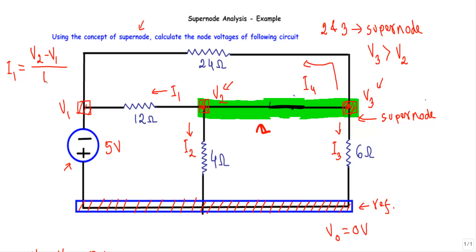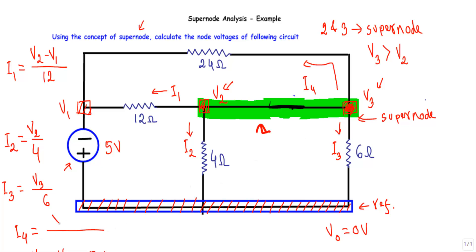I1 equals V2 minus V1 divided by 12 ohm. I2 is flowing from node two towards the ground terminal, which has a voltage of zero, so I2 equals V2 divided by 4. I3 is outgoing from node three, so I3 equals V3 divided by 6. I4 is flowing from node three towards node one, and that branch has a resistance of 24 ohm, so I4 equals V3 minus V1 divided by 24.